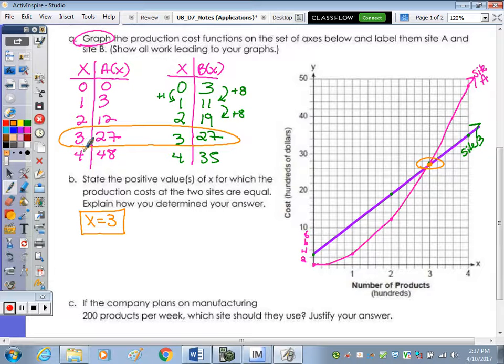Explain how you determine your answer. You could talk about the table of values. So if we explain using the tables, the Y values or costs are equal when X equals 3. Or you could say, explain how you know that is the point of intersection of the two graphs. So that's where the graphs intersect.